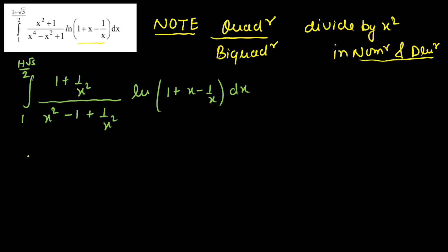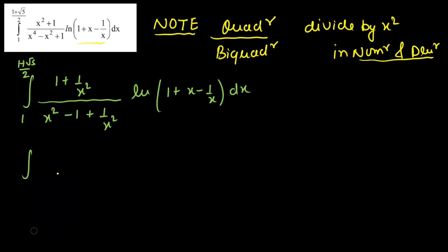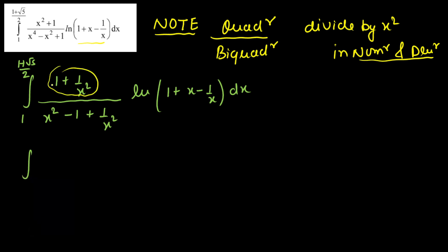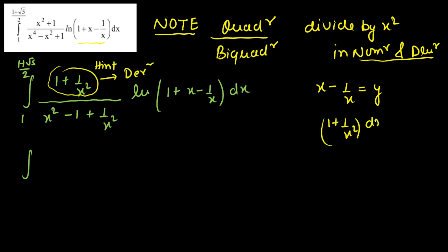Now let me rearrange. Notice the 'floating value' — this is very important, it gives us a hint. In general, the floating value will be the derivative and the rest is the function. So we always look for a function and its derivative inside the integral. If (1 + 1/x²) is our derivative, what function gives this? That function is y = x - 1/x. Differentiating y = x - 1/x gives dy = (1 + 1/x²) dx.